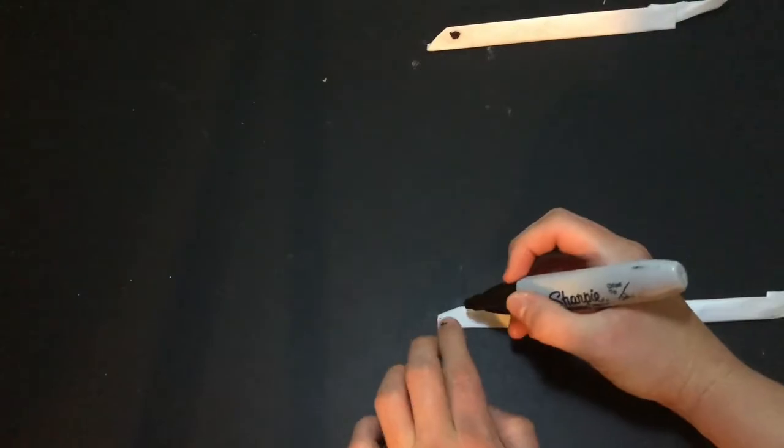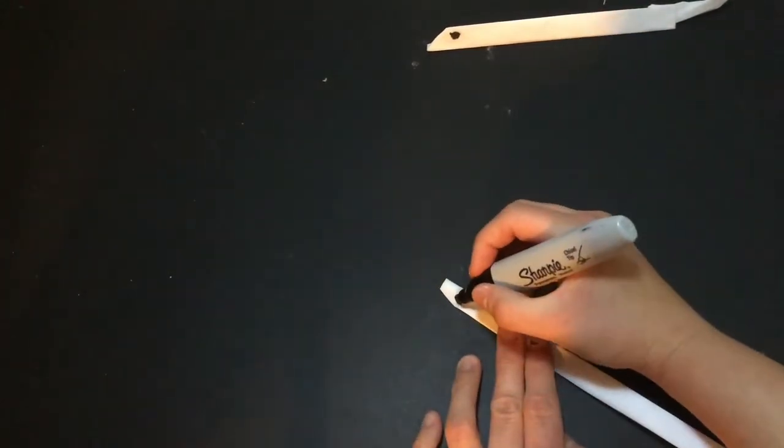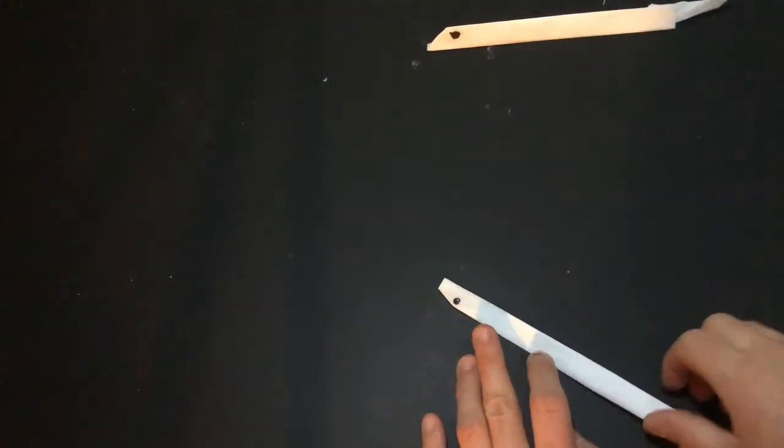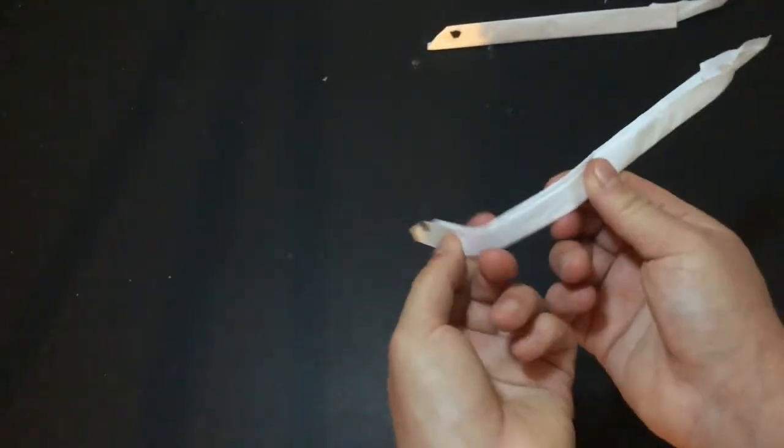Then we're gonna take our Sharpie and draw some eyes on our eel. And if you want you can bend it a little bit so that it looks like it's swimming.